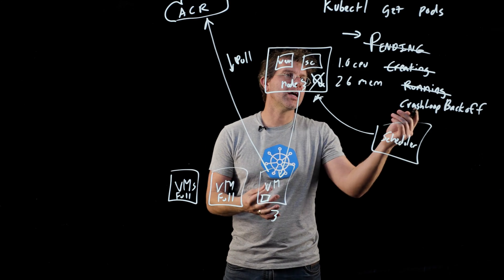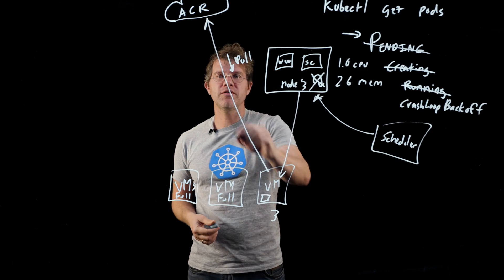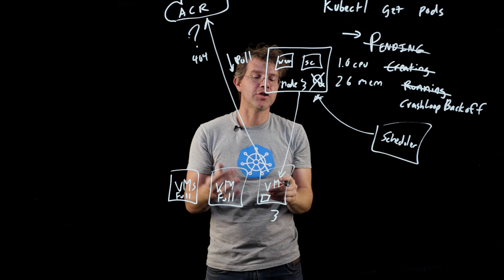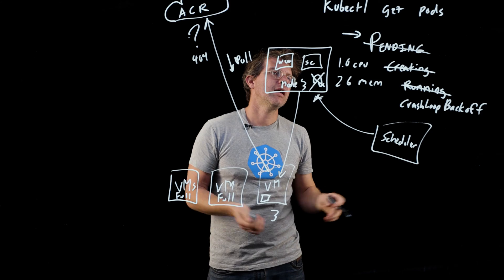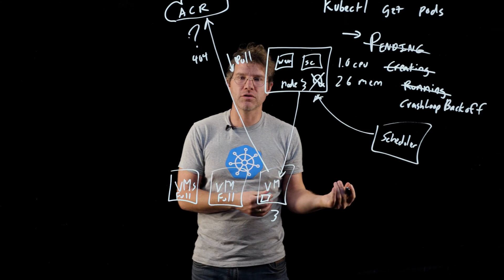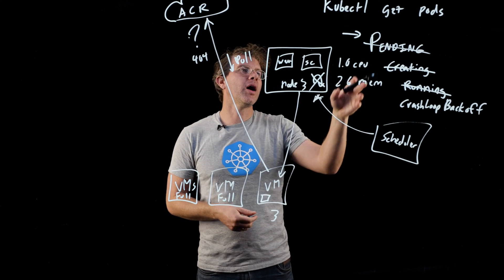Now, another thing that can happen is you could actually give a bad image. So when the VM goes to pull, it could say, hey, I don't know, there's a 404 with pulling the image. I don't know what that image is. When that happens, you're going to get stuck in the creating state, and you're never going to transition to running.